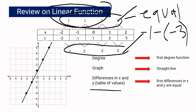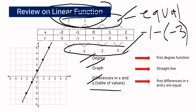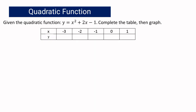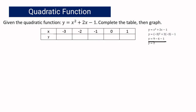Now we have a quadratic function: y equals x squared plus 2x minus 1. Just like before, we will complete the table and graph it. Substituting x equals negative 3: negative 3 squared is 9, plus 2 times negative 3 gives negative 6, minus 1 equals 2. So y is equal to 2.